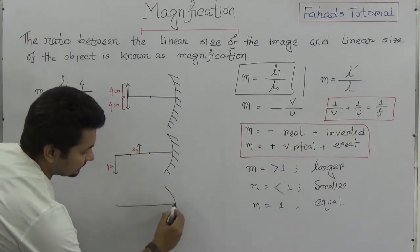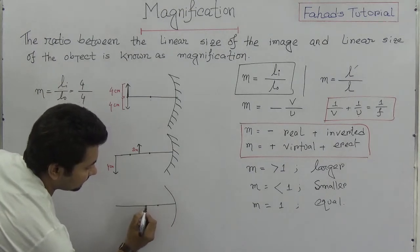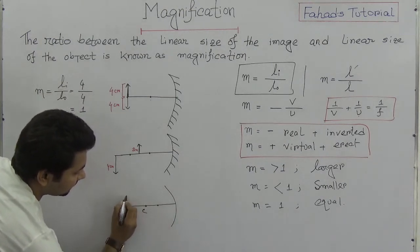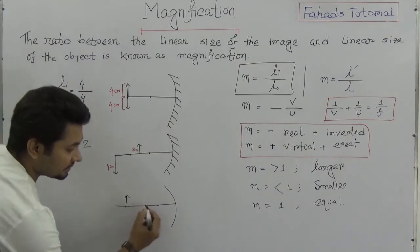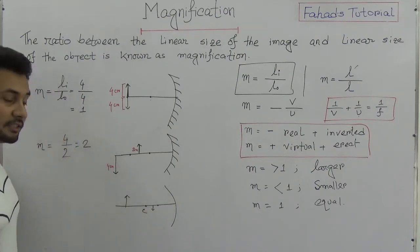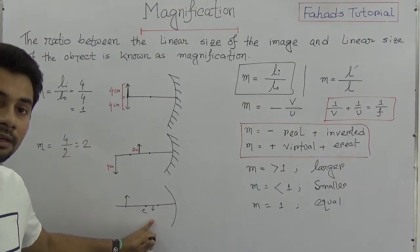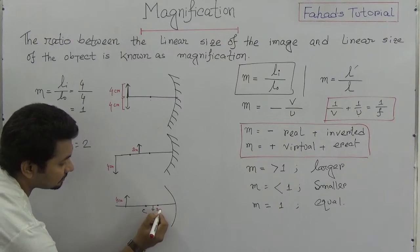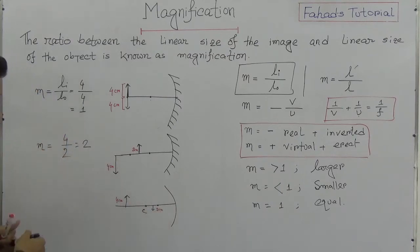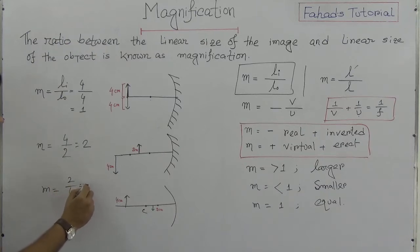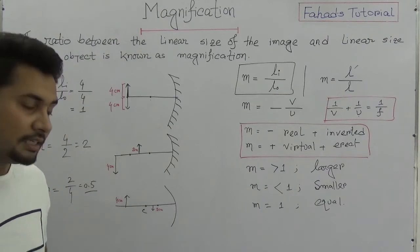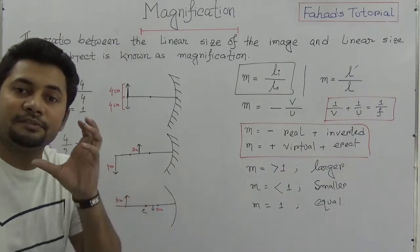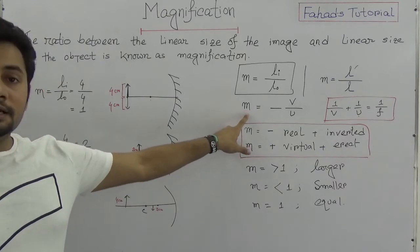When the object is placed beyond C, the image is formed between F and C and is smaller. If the image is 2 cm and the object is 4 cm, then M = 2/4 = 0.5, which is less than one, meaning the image is smaller than the object.